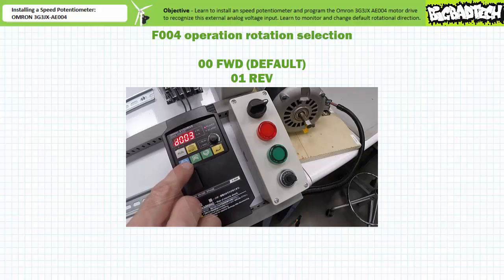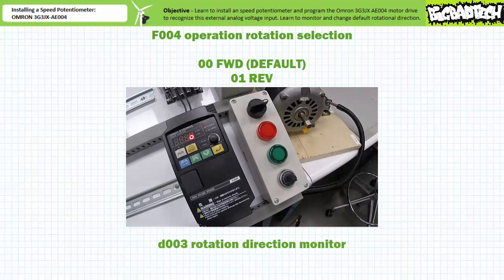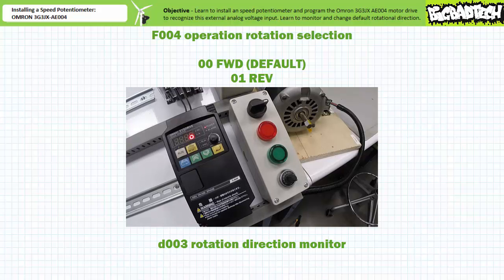We'll initiate operation with parameter D003, the rotation direction monitor, being displayed. The motor accelerates in the opposite direction — the data display indicates the running motor is in R or reverse mode. When we press stop, the motor decelerates and comes to a stop. The rotation direction monitor says zero, or stop.